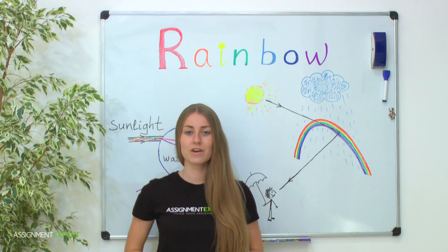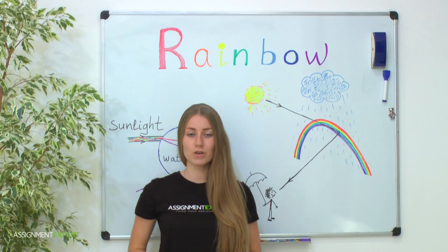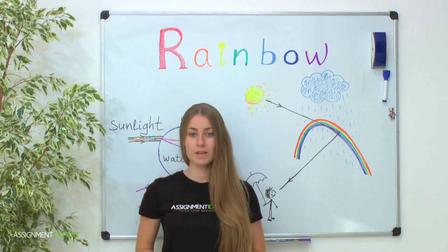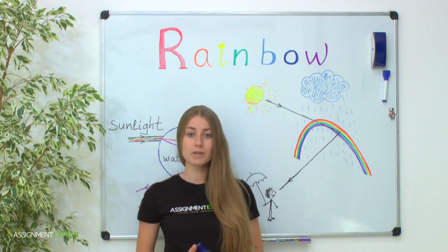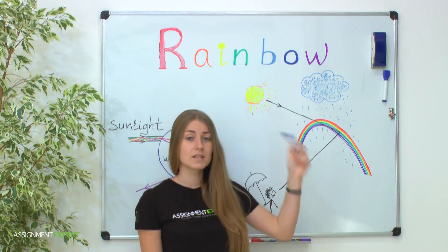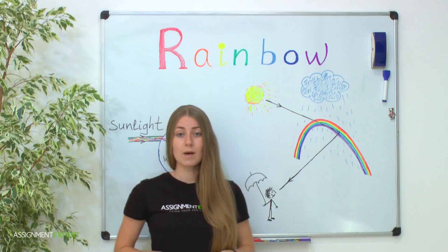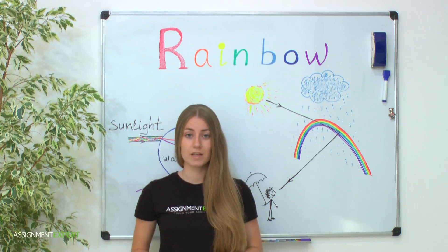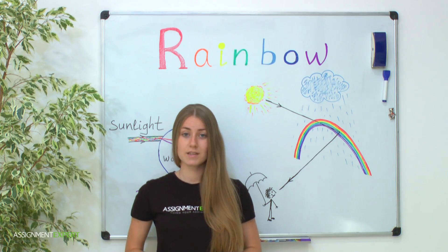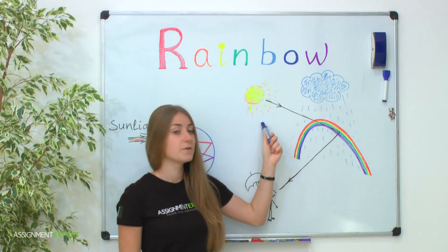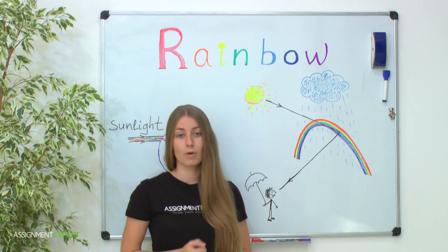To explain the nature of a rainbow, let's first think about what causes it. You probably noticed that a rainbow occurs during or after the rain. But the presence of rain alone is not enough to see it — we need some light. When you have cloudy weather without any ray of sun, even after the rain you can't see a rainbow. But if a few rays of sun appear in the sky, they will make it possible.